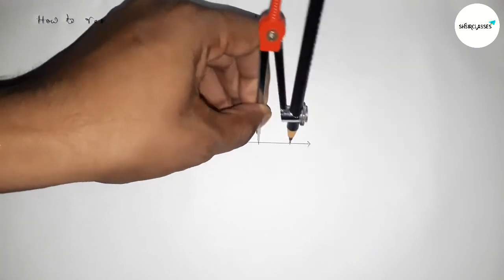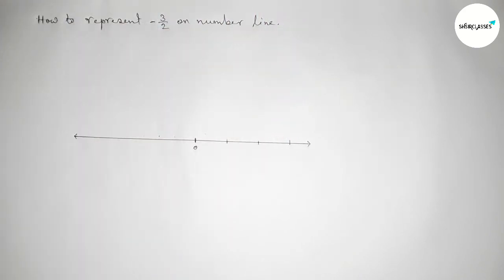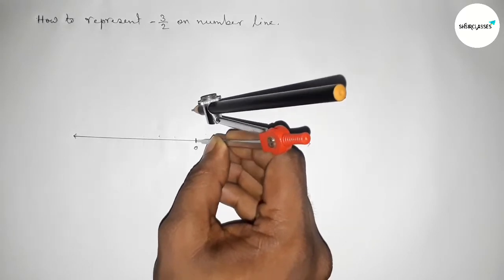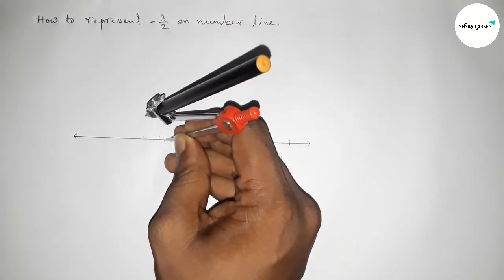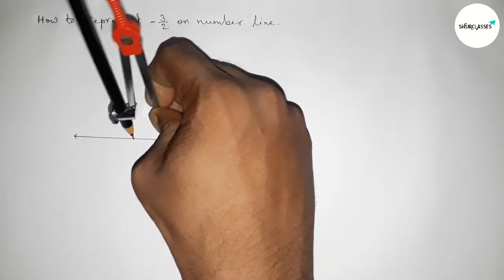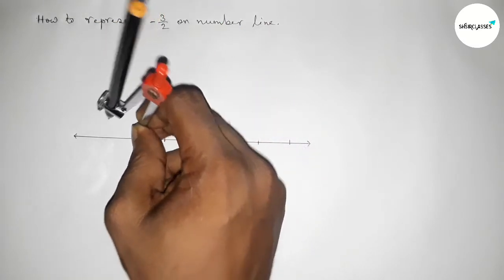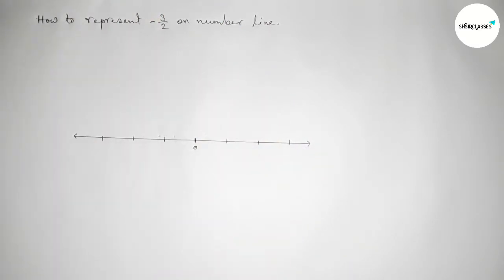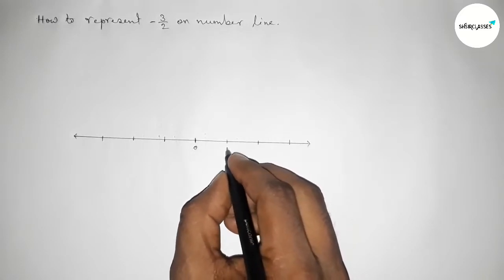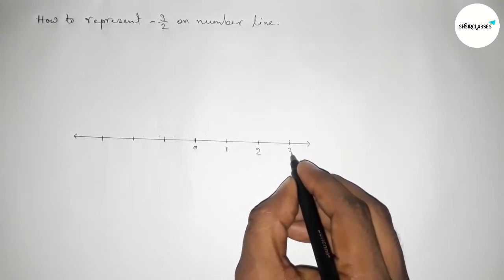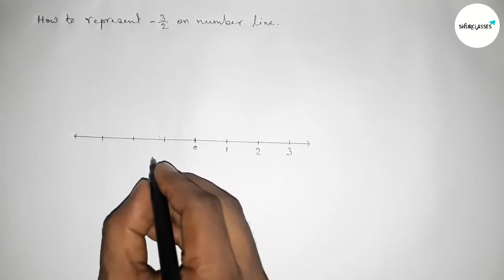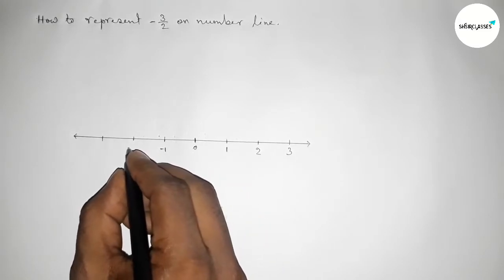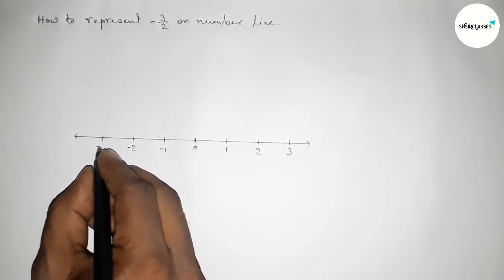By this way, we have to first mark the numbers on the line. So by this way we can get a number line and mark here. Now this side: one, two, three and continuous. And this side: minus one, minus two, minus three and continuous.